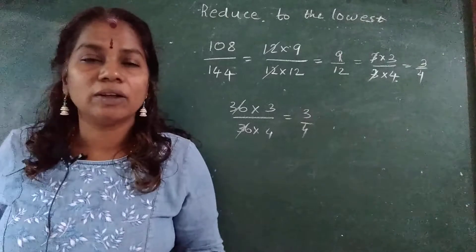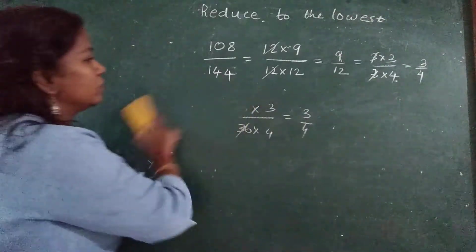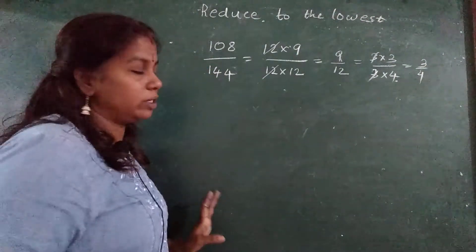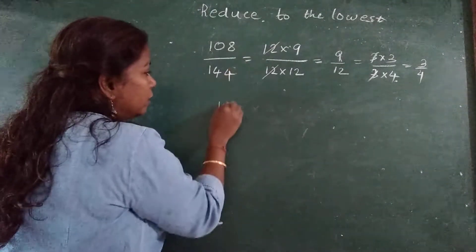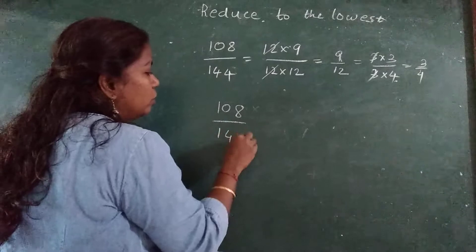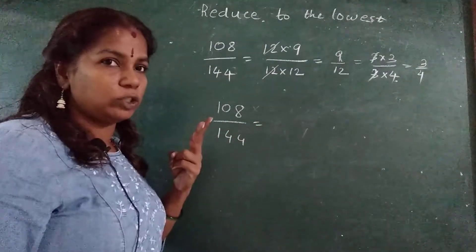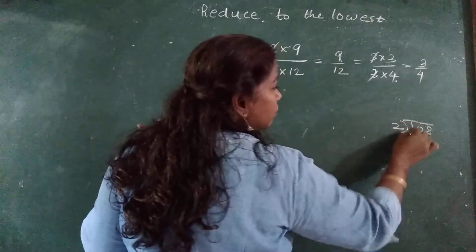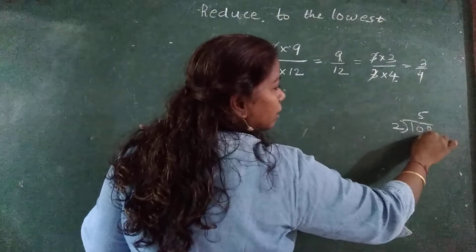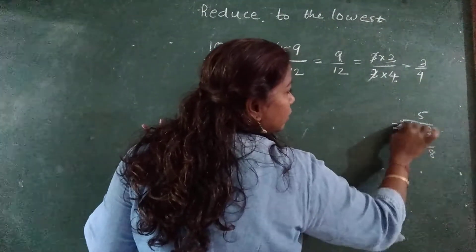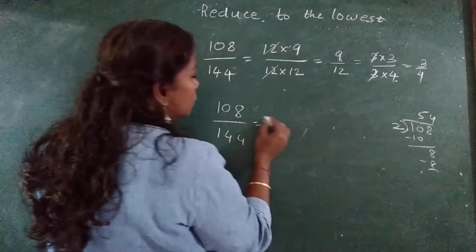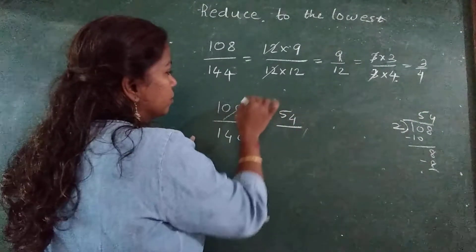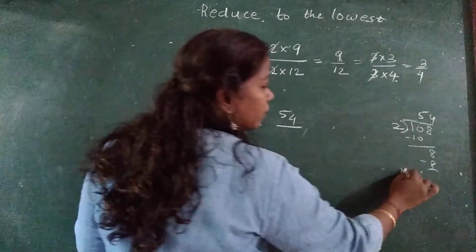In this manner you can go on reducing. Another method which I was telling: one is I had by seeing this number only I understood it comes in 12 table, so I wrote it. Next is this, how I will reduce step by step. First what I will do? I will try with 2. 2, how? 108 divided by 2. 2 fives are 10, minus 8 comes down. So this when I divide with 2.